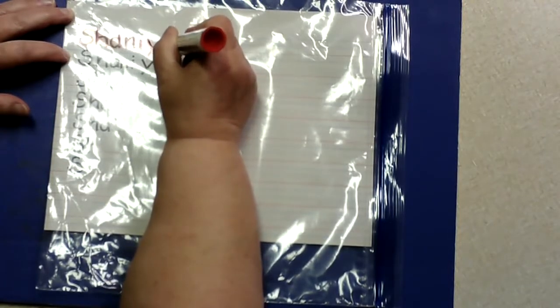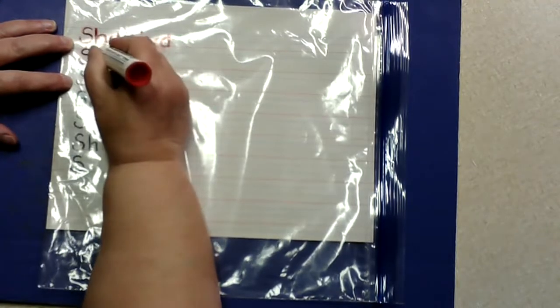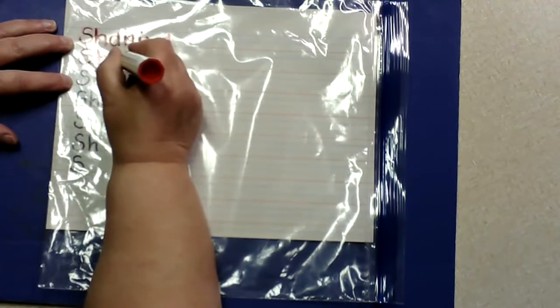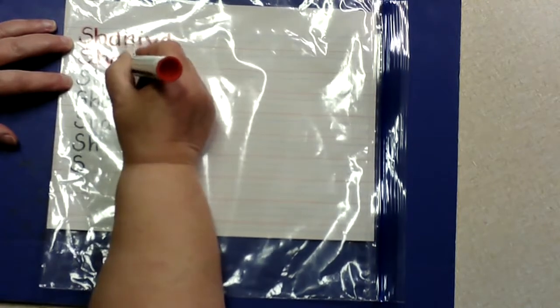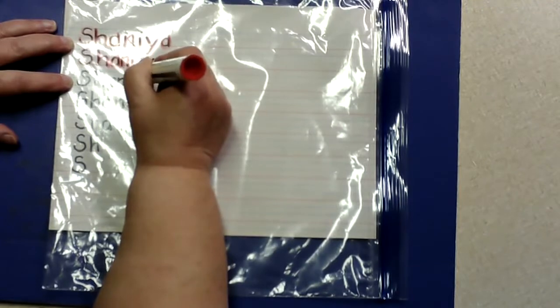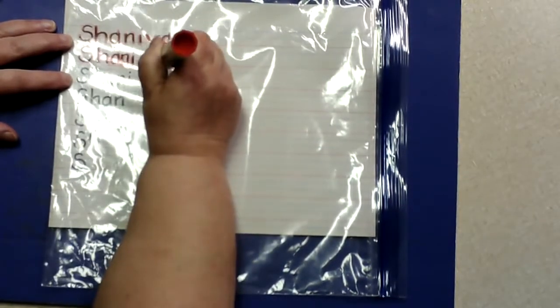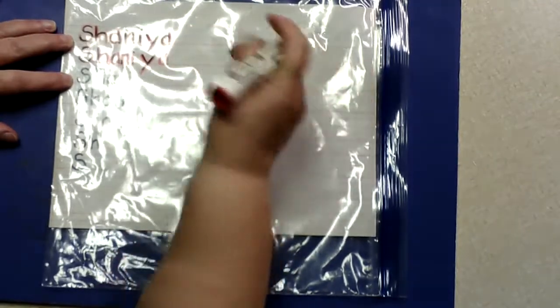And then when they get to that second row, they're going to trace everything. They'll have all the answers of how to write their name except for the last letter. And you can just help them the first few times learning how to form that letter.